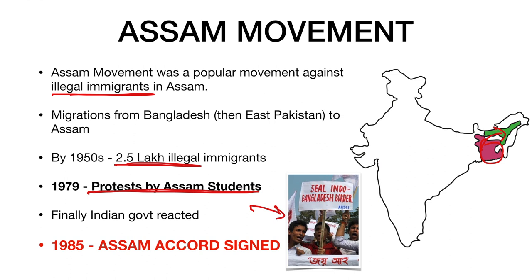This Assam Movement finally compelled the Indian government to identify and expel illegal — mostly Bangladeshi — immigrants from India. The government's response was to protect the Assam people constitutionally, legislatively, and administratively, that is, to safeguard the indigenous Assam people. Finally, the government reacted and the unrest ended officially on 15th August 1985.